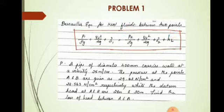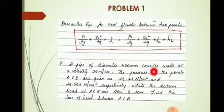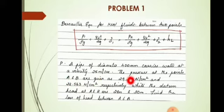We will go to the first problem. A pipe of diameter 400 mm carries water at a velocity of 25 meter per second. The pressure at points A and B are given as 29.43 N per centimeter square and 22.563 N per centimeter square respectively, while the datum head at A and B are 28 meter and 30 meter. Find the loss of head between A and B. The velocity inside the pipe is given, and the pressure and datum head at the two sections are also given.